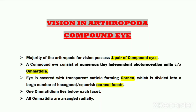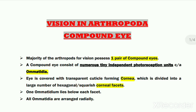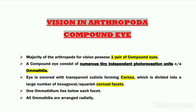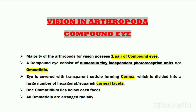Hello dear students. In today's lecture, our topic is vision in the organisms of the phylum Arthropoda, in which we will study about the compound eye, as the majority of arthropods possess one pair of compound eyes for vision. A compound eye consists of thousands of tiny independent photoreception units, and one such unit is termed an ommatidium (plural: ommatidia). Each ommatidium can be considered a very small but independent eye.